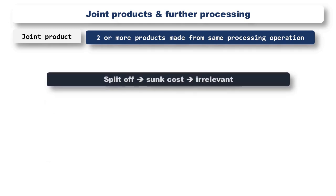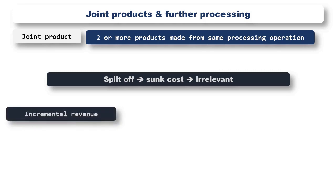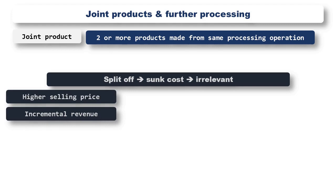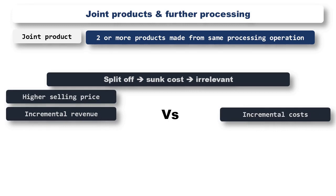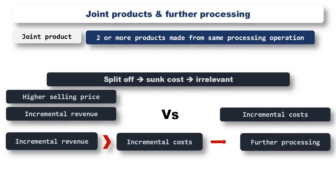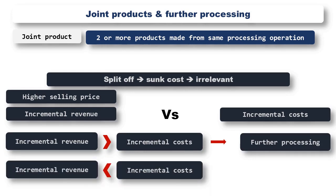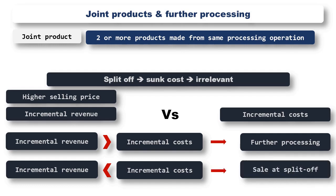As we are using relevant costing here, we are not interested in the cost of the joint product at the time of split-off, as these costs are effectively sunk costs. We want to decide whether to take the joint product and do more with it. At the split-off point the joint product already exists, and therefore the costs in making it have already been incurred and are therefore sunk. We need to compare the extra costs of processing with the increase in the selling price as a result of the further processing, to determine if we are going to make more contribution by continuing with processing or by selling the product at the split-off point. Where the incremental revenue is higher, we should go ahead with the further processing. But if the incremental costs are higher than the incremental revenue, then we should sell the products off at the split-off point without further processing.